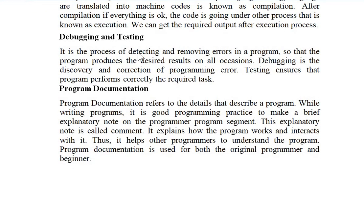Next is debugging and testing. Debugging is the process of detecting and removing errors in a program so that the program produces the desired result. Whenever you write code, you may get a number of errors — the process of correcting those errors is called debugging. Testing ensures that the program performs correctly the required tasks.